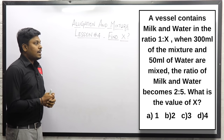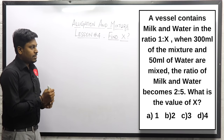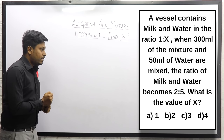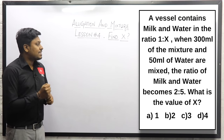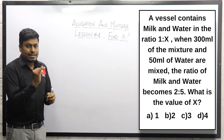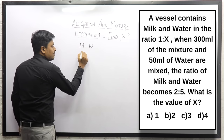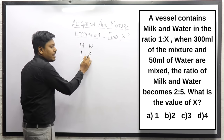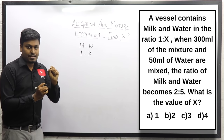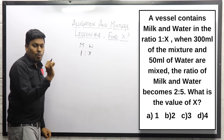Question number one: A vessel contains milk and water in the ratio 1 is to x. When 300 ml of mixture and 50 ml of water is mixed, the ratio of milk and water becomes 2 is to 5. So what is the value of x? The milk is 1 part and water is x part — our target is to find that x value.